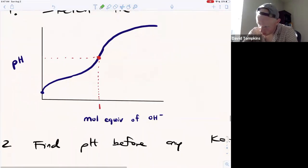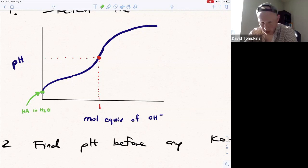The first point we'll do is initially, when there's no strong base added, or this is still a solution of HA in water. It's just a weak acid problem where we use the Ka in an ice table. We'll do that problem in just a minute.